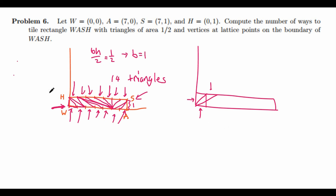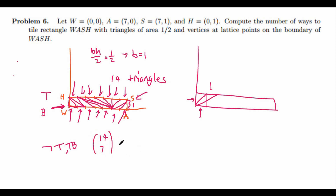Now it remains to count how many ways we can choose the bases in order from left to right. Let's label choosing a base from the top as T and from the bottom as B. We're essentially ordering seven T's and seven B's — since we always pick the leftmost unused base in whichever row we choose, we don't need to specify which one. So we just need to arrange seven T's and seven B's, which gives us 14 choose 7 as our answer. I'll leave the actual calculation as an exercise to the reader. And there you have it.